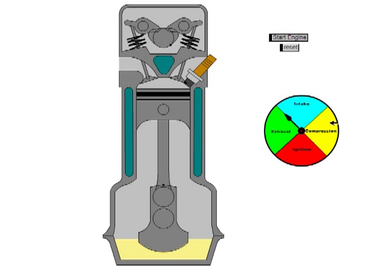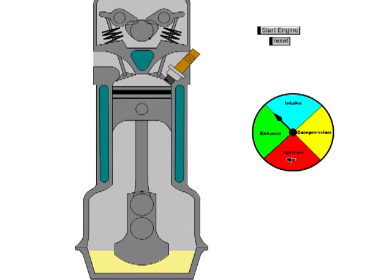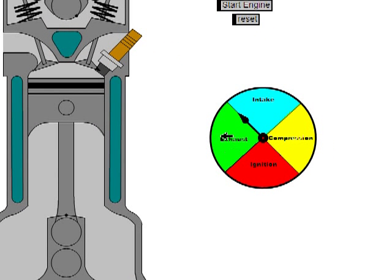First, there's the intake, the compression, the ignition, and then the exhaust. Now, when I get this thing started to run, you'll see the arrow pointing around to what cycle it's on. So, let's do that.